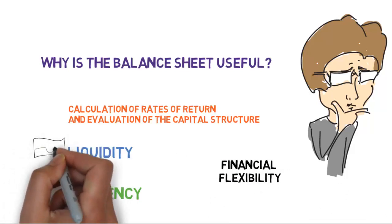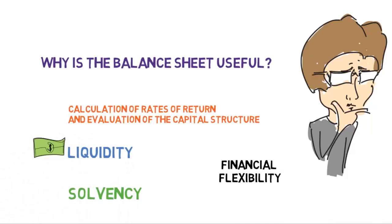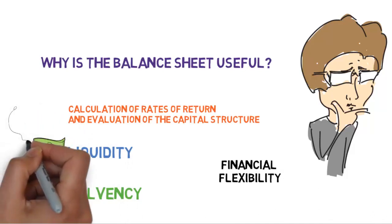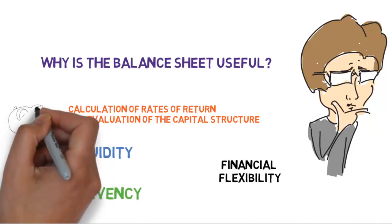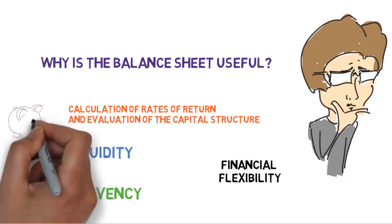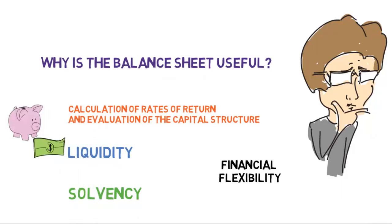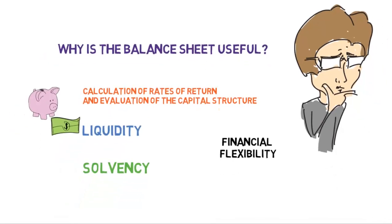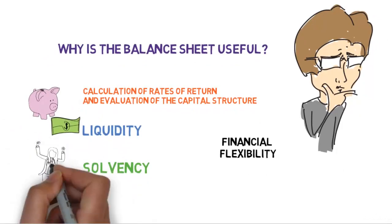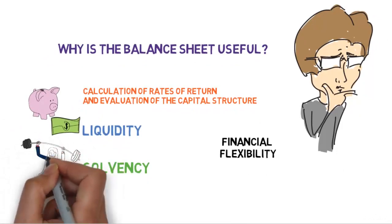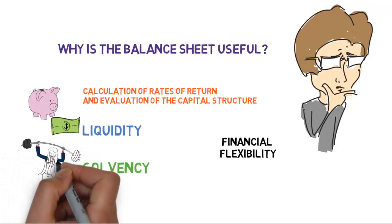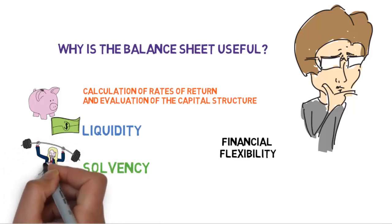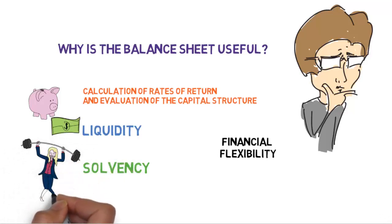The liquidity tells us how fast an asset can be realized or converted into cash or how fast a liability has to be paid. The solvency actually tells us whether the company is able to pay its debts. High level of debt means low solvency and higher risk.